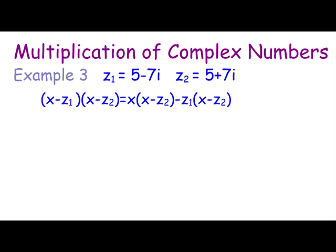Now we're going to generalize this shortly, but basically in example 2 you might remember Z1 times Z2 was actually 74, which is really what? 5 squared plus 7 squared.